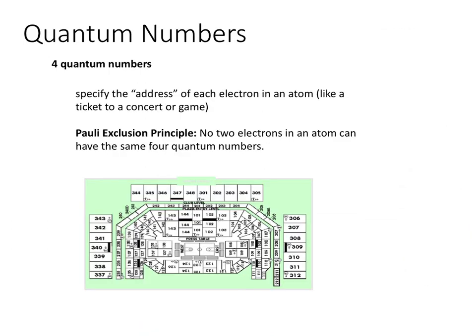Quantum numbers come in sets of four. The four quantum numbers are identifiers for the specific location of an electron within an atom — they specify the address or location of each and every electron. The Pauli exclusion principle states that no two electrons can have the same four quantum numbers, just like no two people can have the same address.